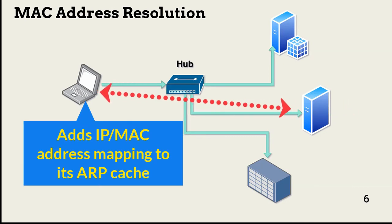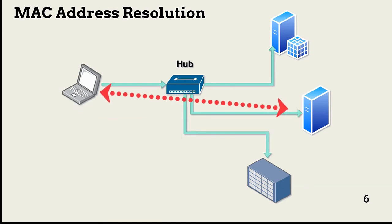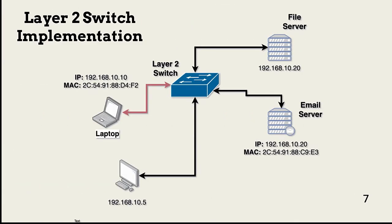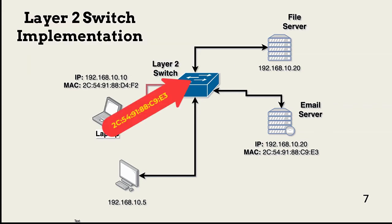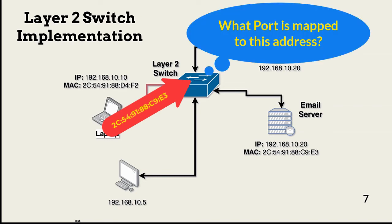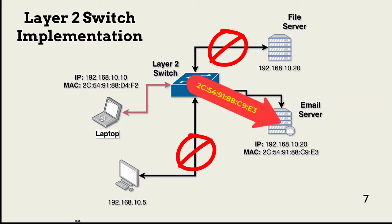Now we can move to switches and the minimization or elimination of collision domains. This is an example OSI Layer 2 switch-centric network with a very common configuration — each device is connected to its own switch port. Switches work differently than hubs: switches only send traffic out a port where the target MAC address resides. So if the laptop sends a packet to the email server using the server's MAC address, the switch looks at the MAC address and sends the packet out the port to which the server is connected. Neither the file server nor the desktop will see the packet.